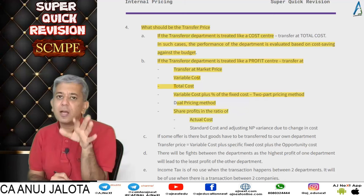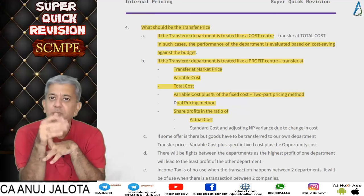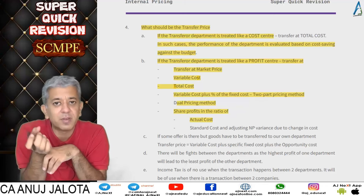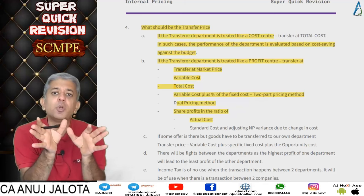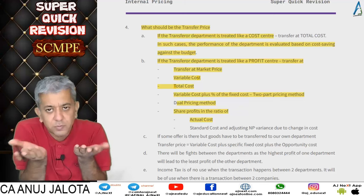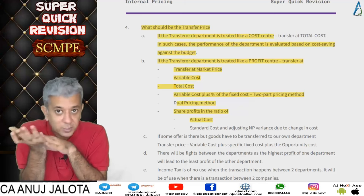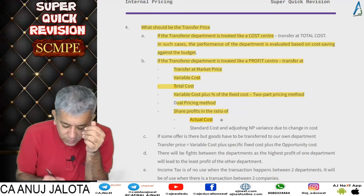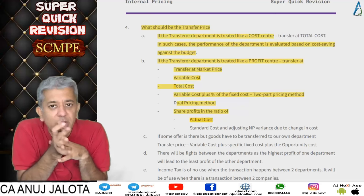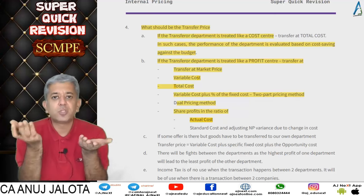Another very popular method: share the profits in the ratio of actual cost. Don't decide any transfer pricing method in advance. The first division transfers goods to the second division, which sells in the market and earns profit. This profit is divided between both divisions — either in a pre-determined ratio like 40:60, or in the ratio of actual cost.